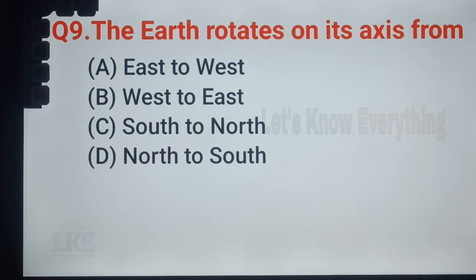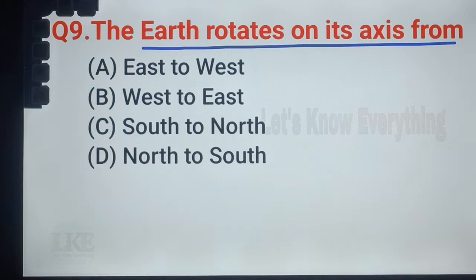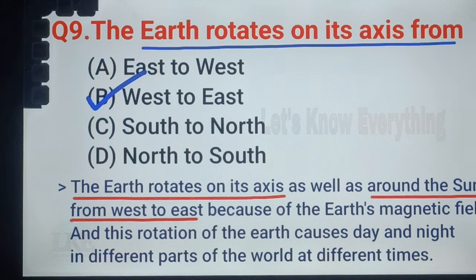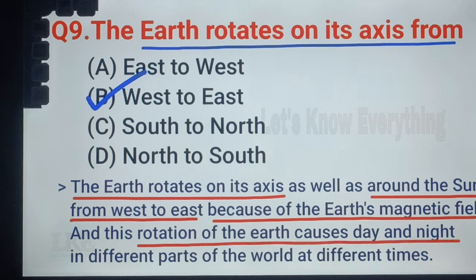Question number 9: the Earth rotates on its axis from west to east. The Earth rotates on its axis as well as around the sun, from west to east, because of the Earth's magnetic field. This rotation of the Earth causes day and night in different parts of the world at different times.